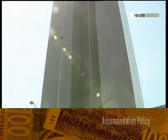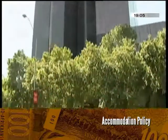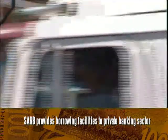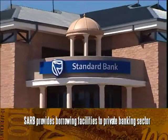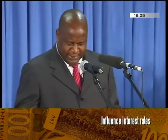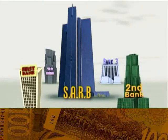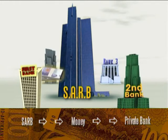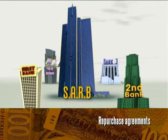It's through something called accommodation policy that our central bank, the South African Reserve Bank, provides borrowing facilities to the private banking sector. The Reserve Bank relies extensively on its accommodation policy to influence interest rates and to achieve their primary objective, price stability. When private banks need to borrow money to finance their shortfalls or deficits, they do it by borrowing from the central bank, through repurchase agreements between the South African Reserve Bank and the private bank in question.